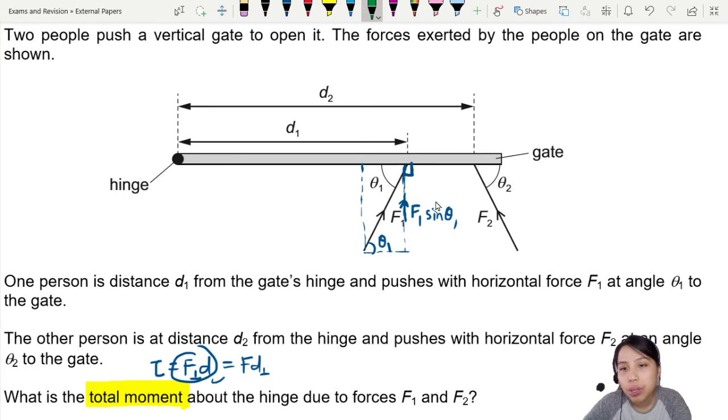We need to do the same thing for the other one also. You can either resolve to this side or resolve to this side, but you need to know that the angle here is also theta 2. So what is this force, this green arrow? This will be F2 sine theta 2.